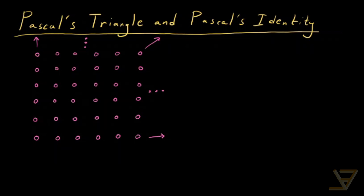Let's say we have a grid like this. We're looking at the first quadrant, and we're going to call this point 0, 0 as usual. We pick some generic point m, n. What we want to do is consider the paths from (0,0) to (m,n) that are always going to the right or going upwards — any combination of those two directions only.